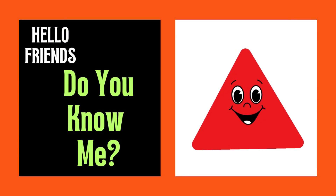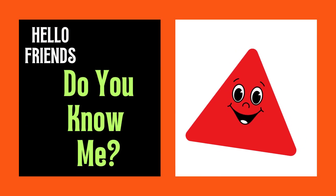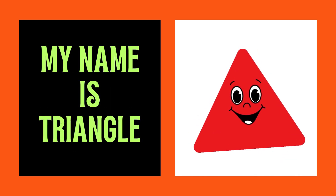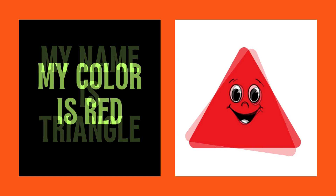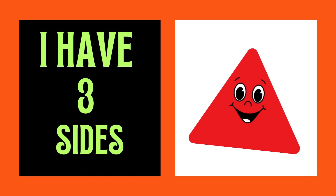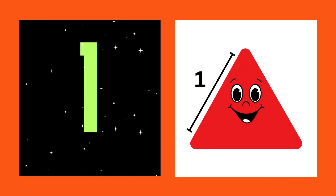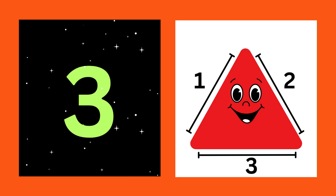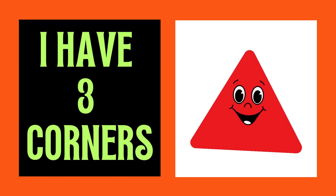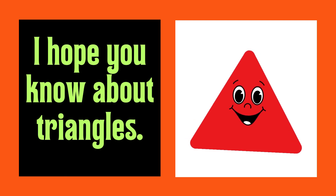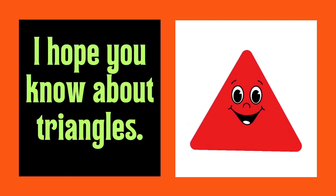Hello friends, do you know me? Let me introduce myself. My name is Triangle. My color is red. I have three sides: one, two, three. I have three corners: one, two, three. Hey my buddies, I hope you know about triangles.